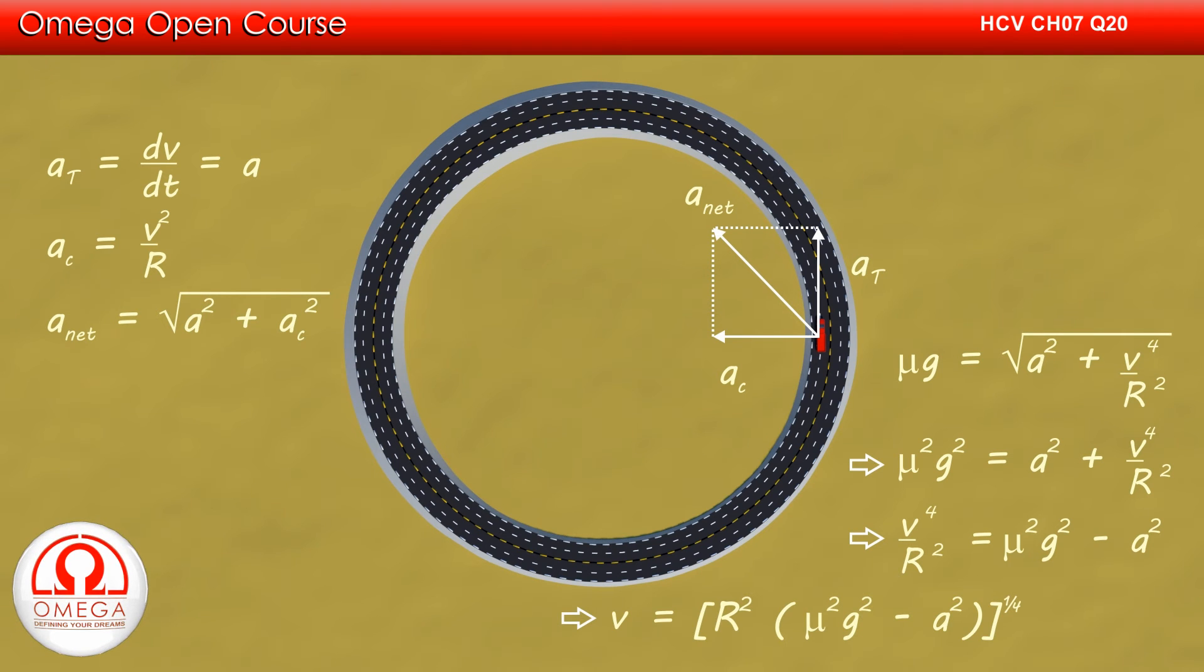Or v = [R²(μ²g² - a²)]^(1/4). This is our answer.